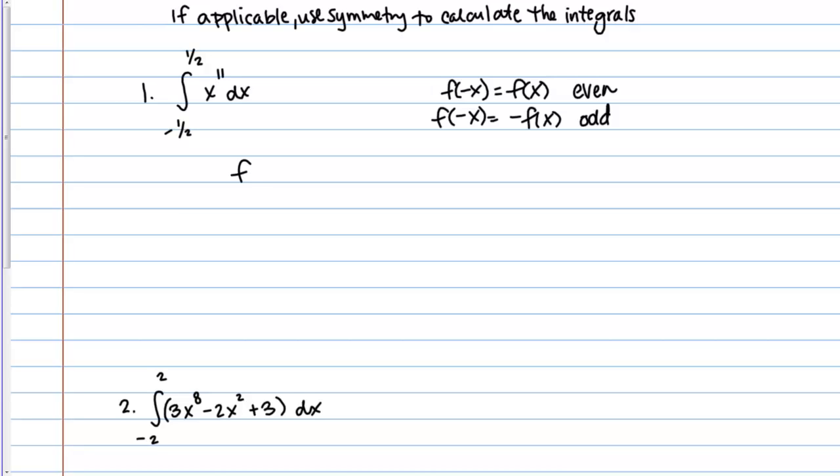Here we have f(x) equals x to the 11th. So f of negative x is going to be negative x to the 11th. Now, if I take something negative and raise it to an odd power, it remains negative. For example, like if I did negative 2 to the 3rd power, that would be negative 8.